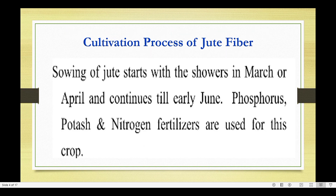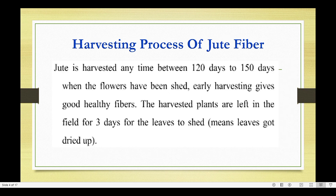The first step is cultivation. Sowing of jute starts with showers in March or April and continues till early June. Phosphate, potash, and nitrogen fertilizers are used for this crop. This is the cultivation process.